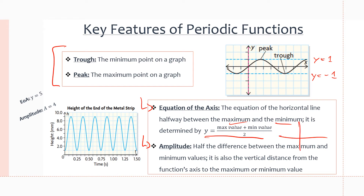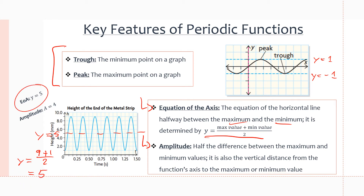Let's look at the metal strip example. We have the height and the time, and as time goes on the height goes up and down. We want to calculate the equation of the axis and amplitude. The equation of the axis is the line right down the middle. We can count that there are 8 squares, and the midline is at y = 5. Calculating: the maximum value is 9, the minimum is 1, so (9 + 1) ÷ 2 = 10 ÷ 2 = 5. So the equation of the axis is y = 5.